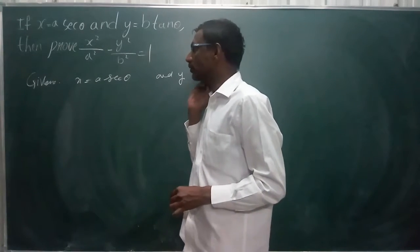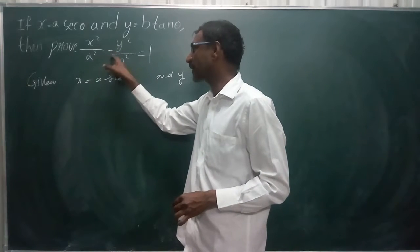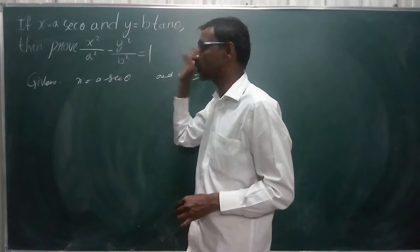Here I would like to prove x square by a square minus y square by b square is equal to 1.